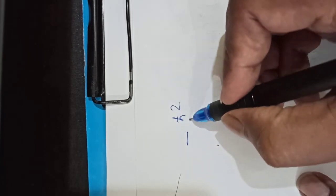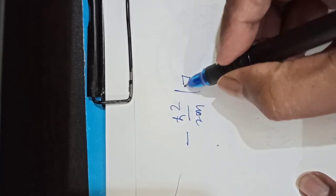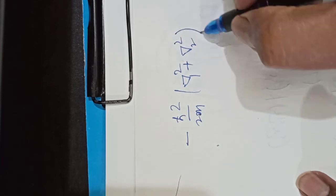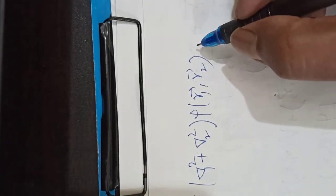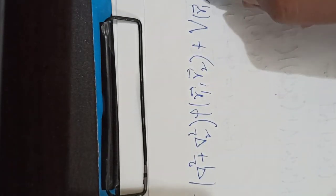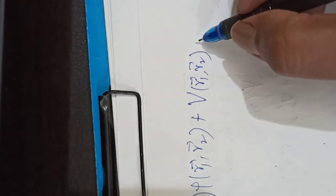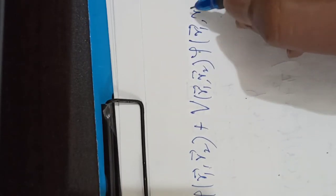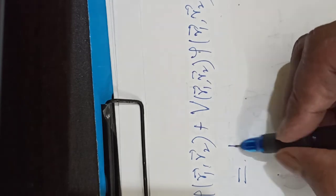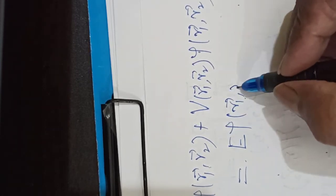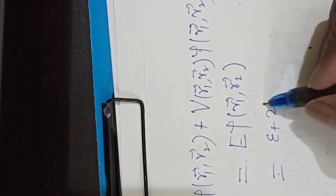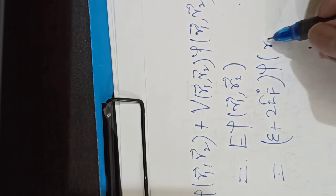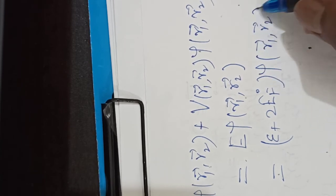[-ℏ²/2m (∇₁² + ∇₂²)]ψ(r₁, r₂) + V(r₁, r₂)ψ(r₁, r₂) = Eψ(r₁, r₂). And this I write as (ε + 2EF0)ψ(r₁, r₂).